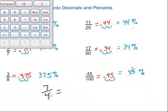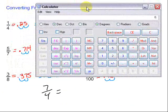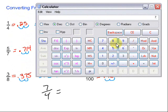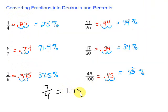So, we grab our calculator again, and we're going to take seven and divide it by four. Top number divided by the bottom number, always, gives us one point seven five. So, we get one point seven five. There's our decimal.